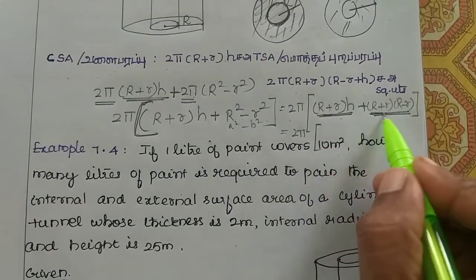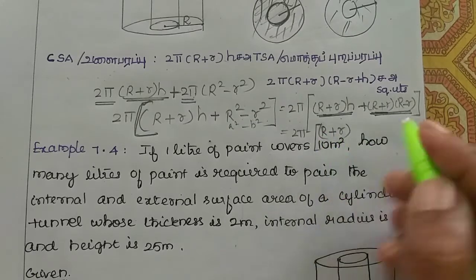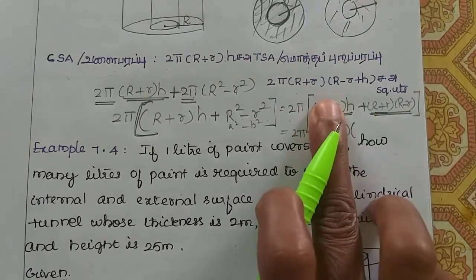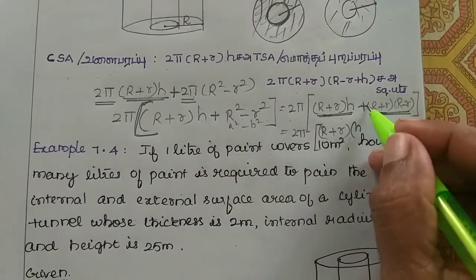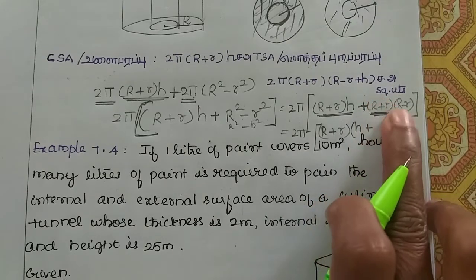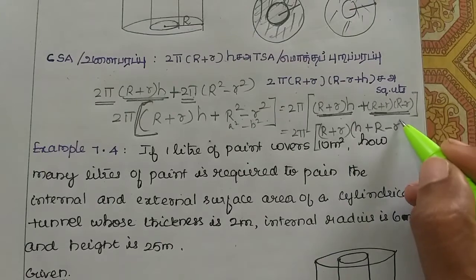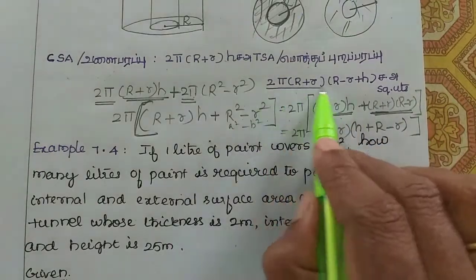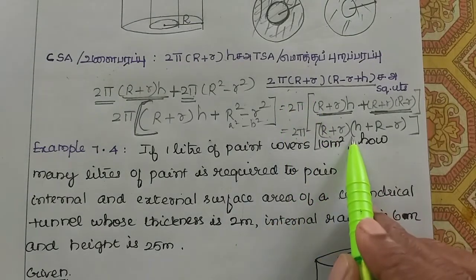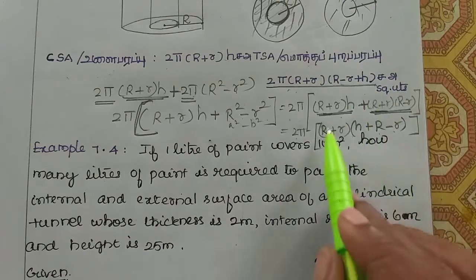R plus r is common in both terms. So we factor out (R + r). The final formula becomes: 2π(R + r)(R − r + h). This is the total surface area formula for the hollow cylinder.